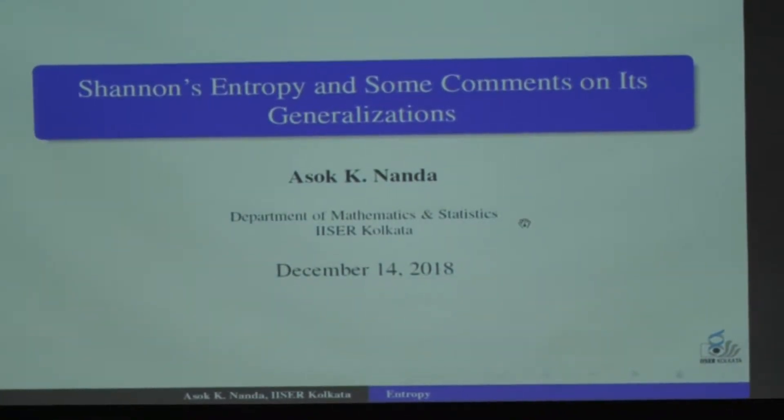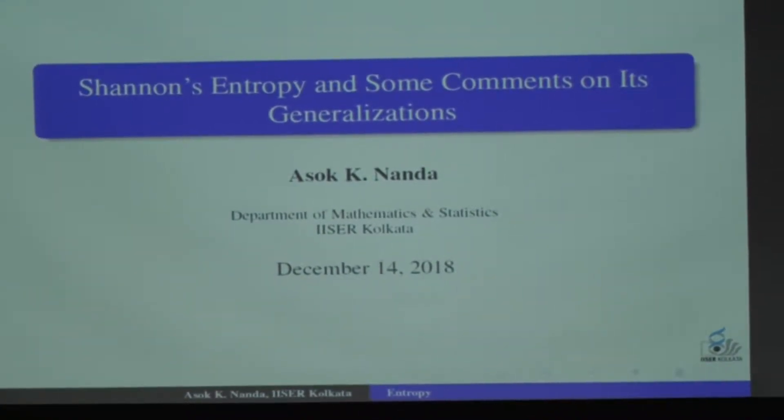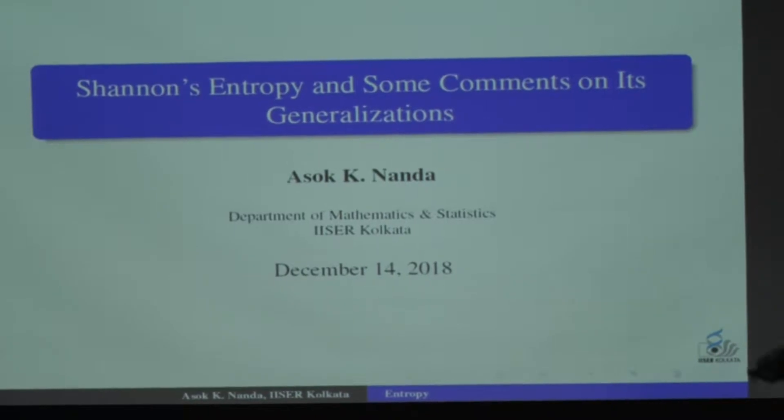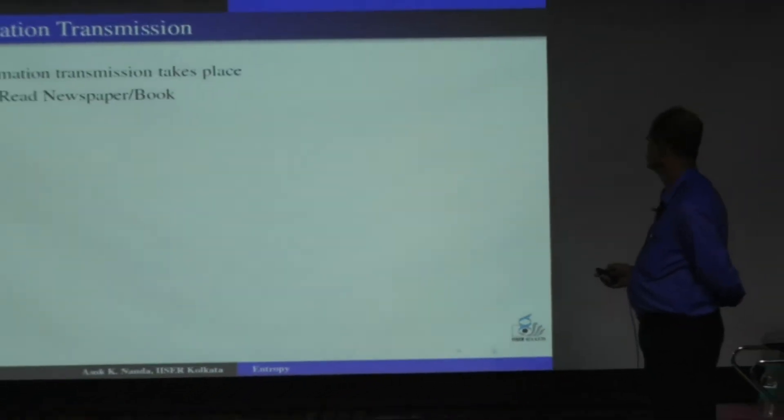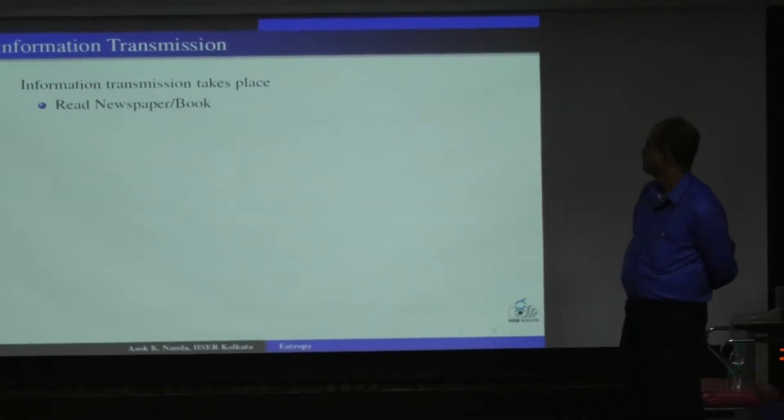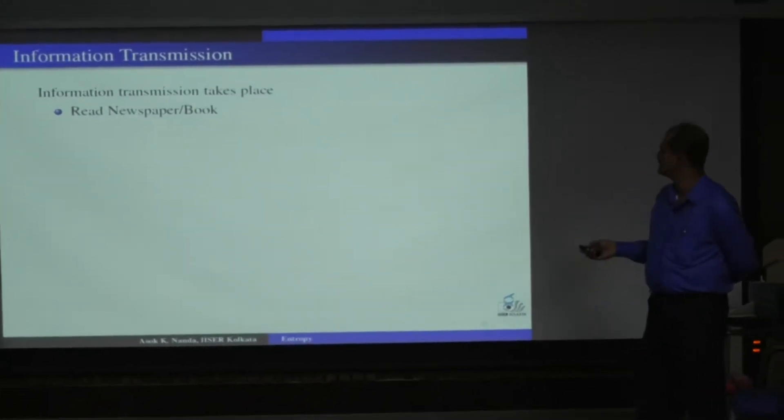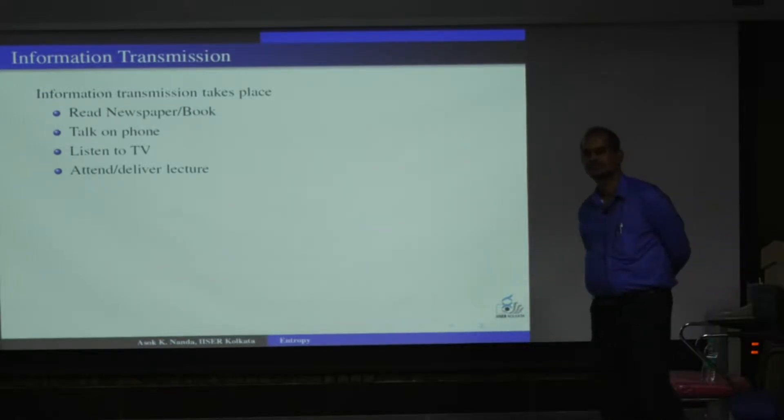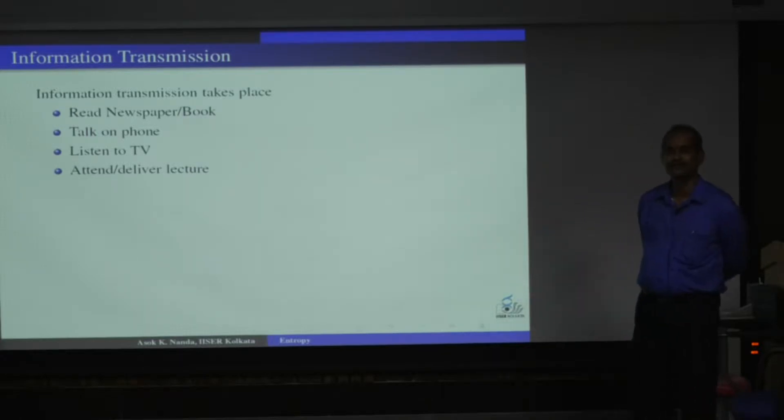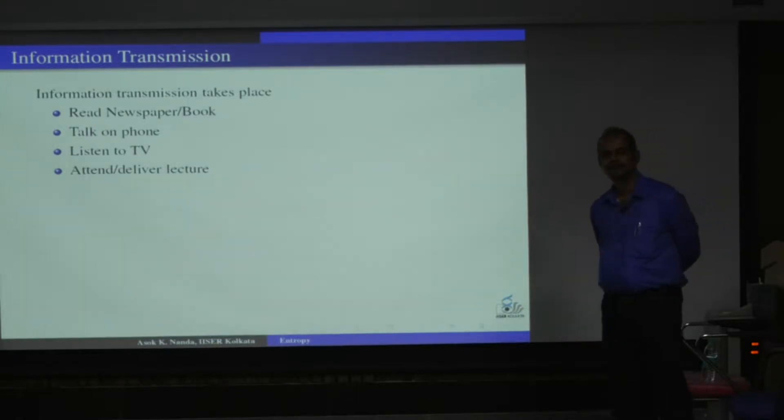We'll talk about Shannon's entropy and some comments on the generalizations. Information transmission takes place in different ways. When we read newspapers, books, talk on phone, listen to TV, and lectures like we've been doing for the last 12 days. We are having this transformation of information, transferring information from some place to another.